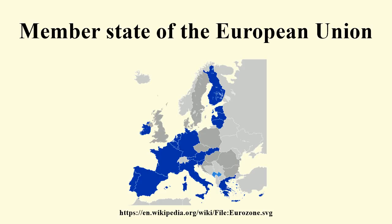There are also differences in the level of self-governance for the sub-regions of a member state. Most states, especially the smaller ones, are unitary states, meaning all major political power is concentrated at the national level. Some states allocate power to more local levels of government. Austria, Belgium and Germany are full federations, meaning their regions have constitutional autonomies.